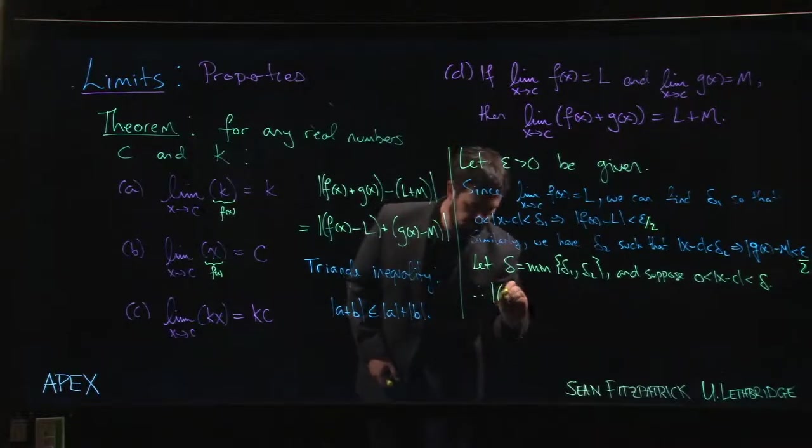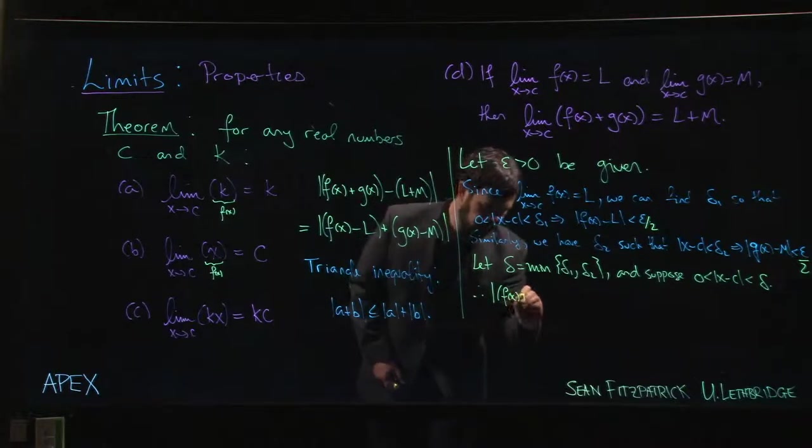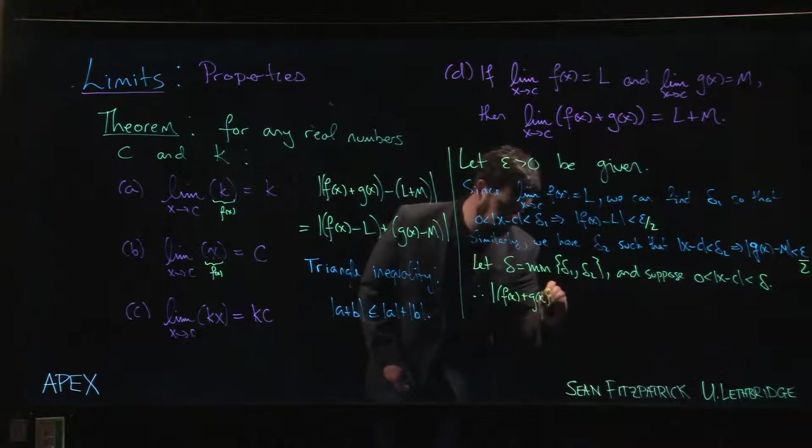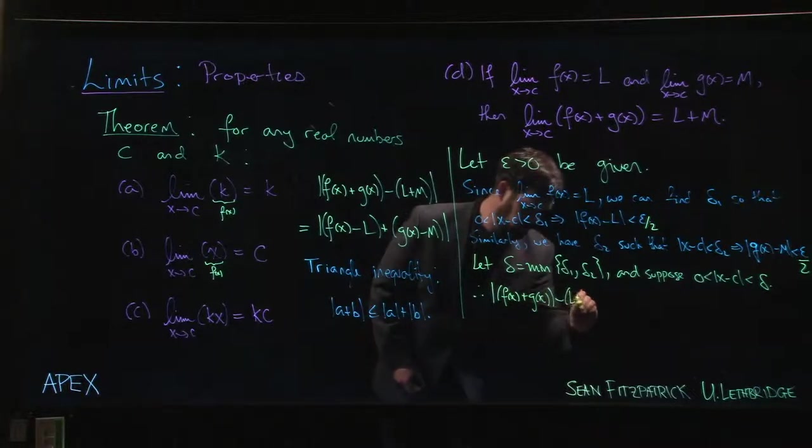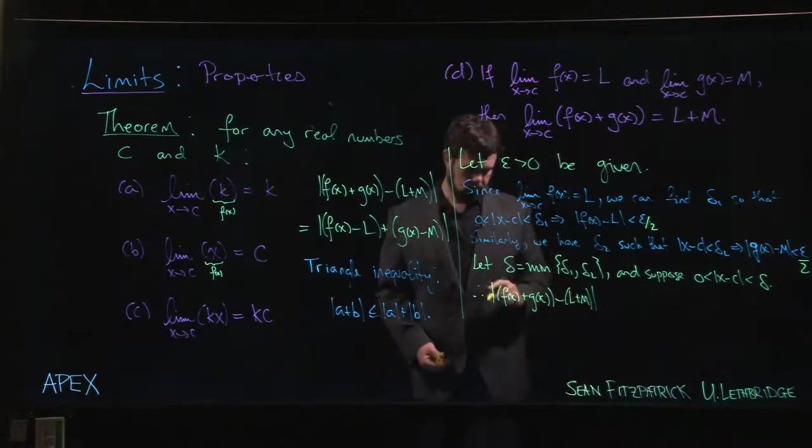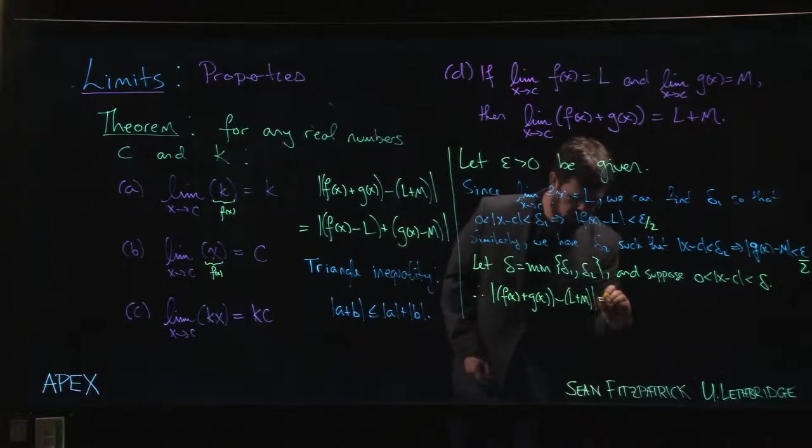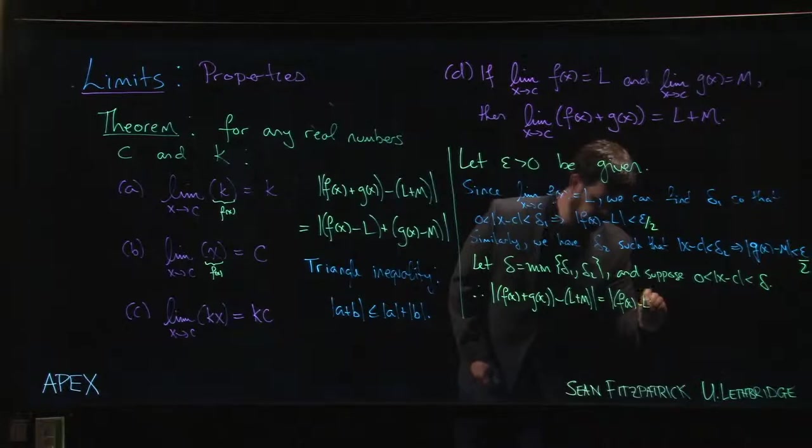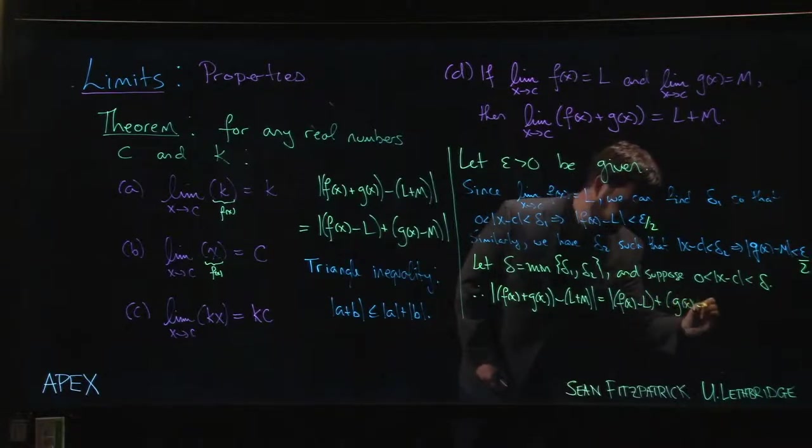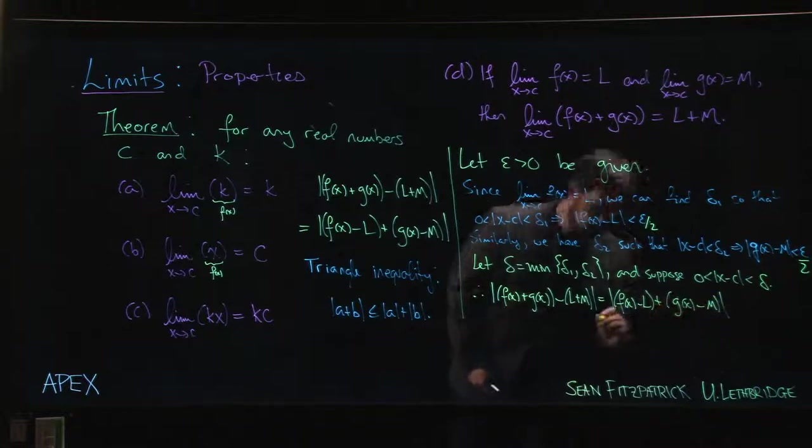Therefore, |f(x) + g(x) - (L + M)| equals the absolute value of f(x) - L + g(x) - M.